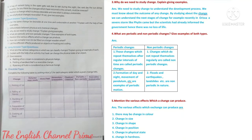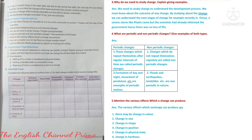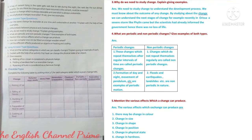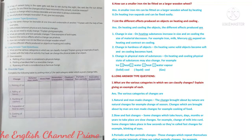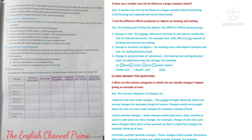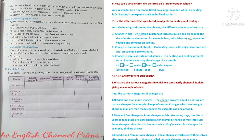Question five: Mention the various effects which a change can produce. The various effects are: first, change in color; second, change in size; third, change in shape; fourth, change in position; fifth, change in physical state; sixth, change in hardness. Question six: How can a smaller iron rim be fitted on a larger wooden wheel? A smaller iron rim can be fitted on a larger wooden wheel by heating it. On heating, iron expands and can be fixed easily. Later, it is cooled and kept tight.